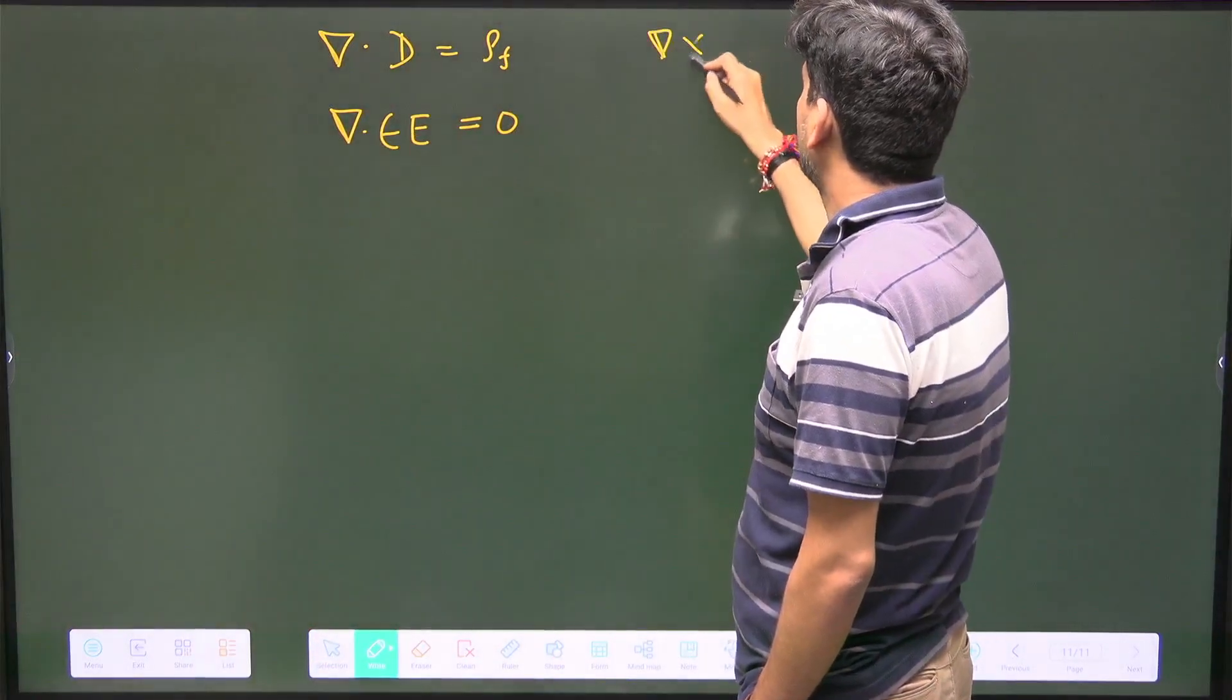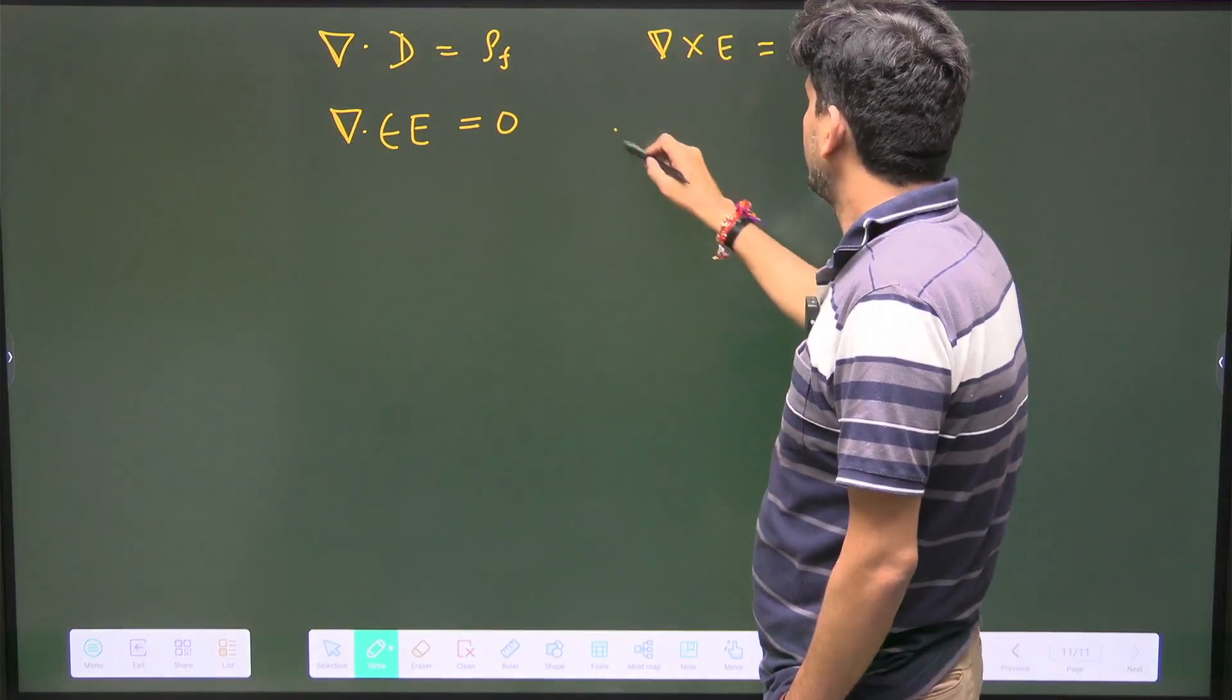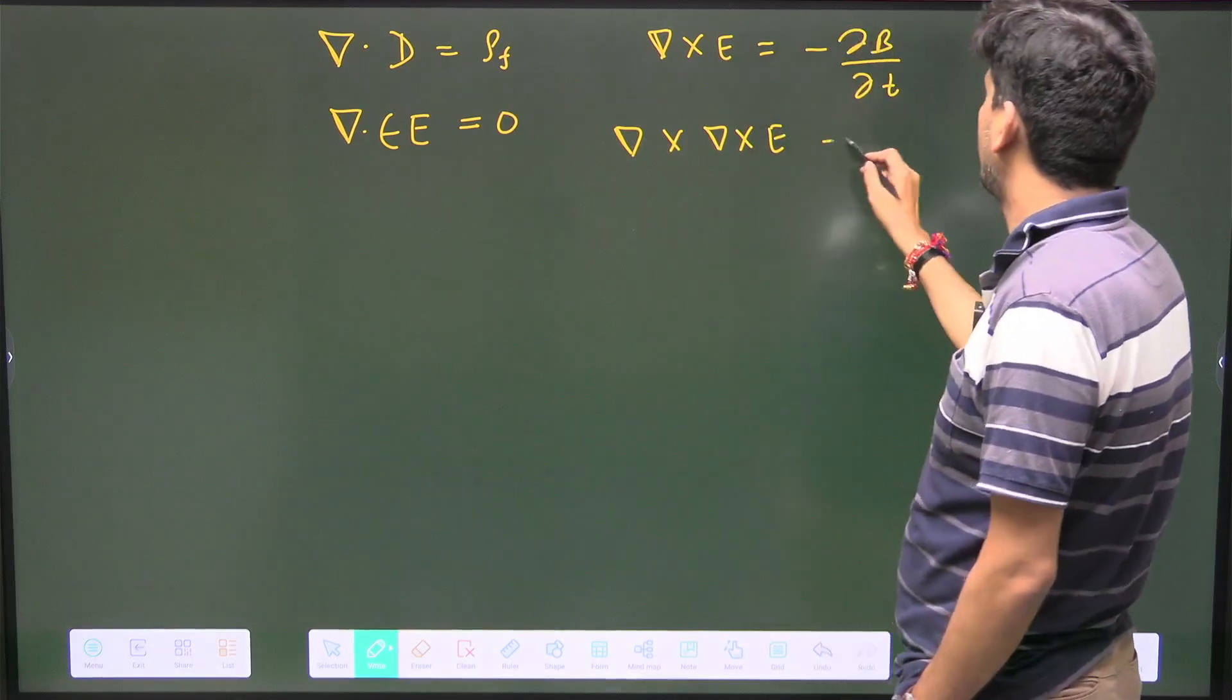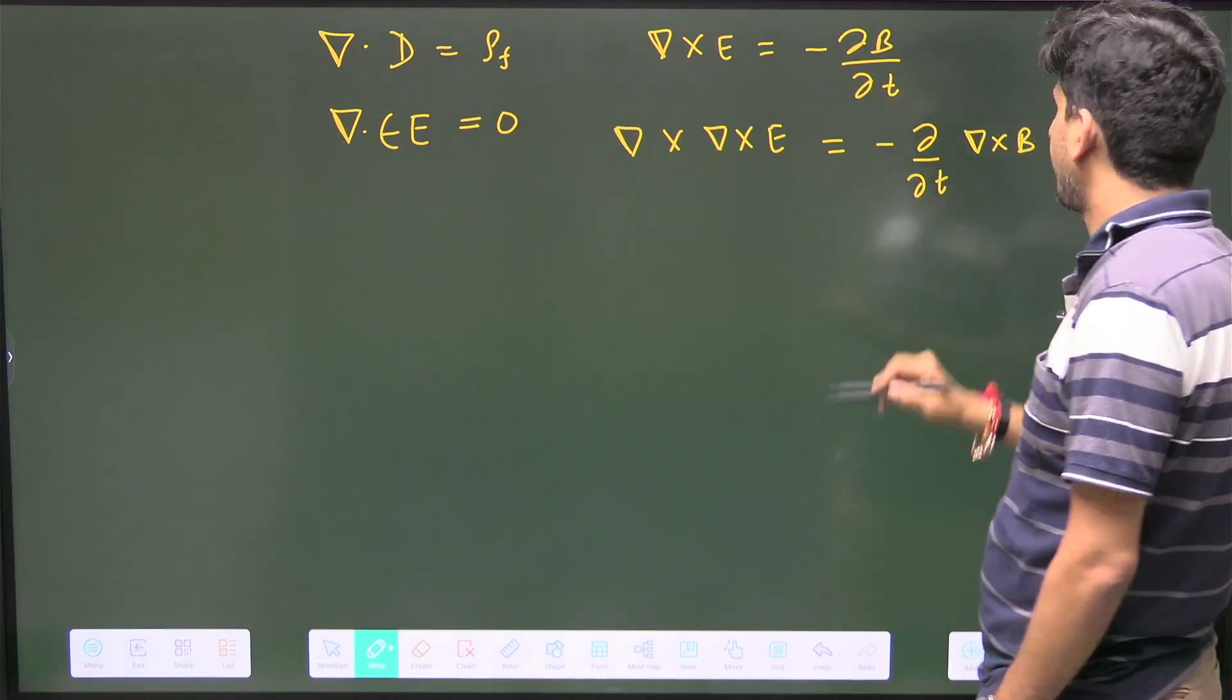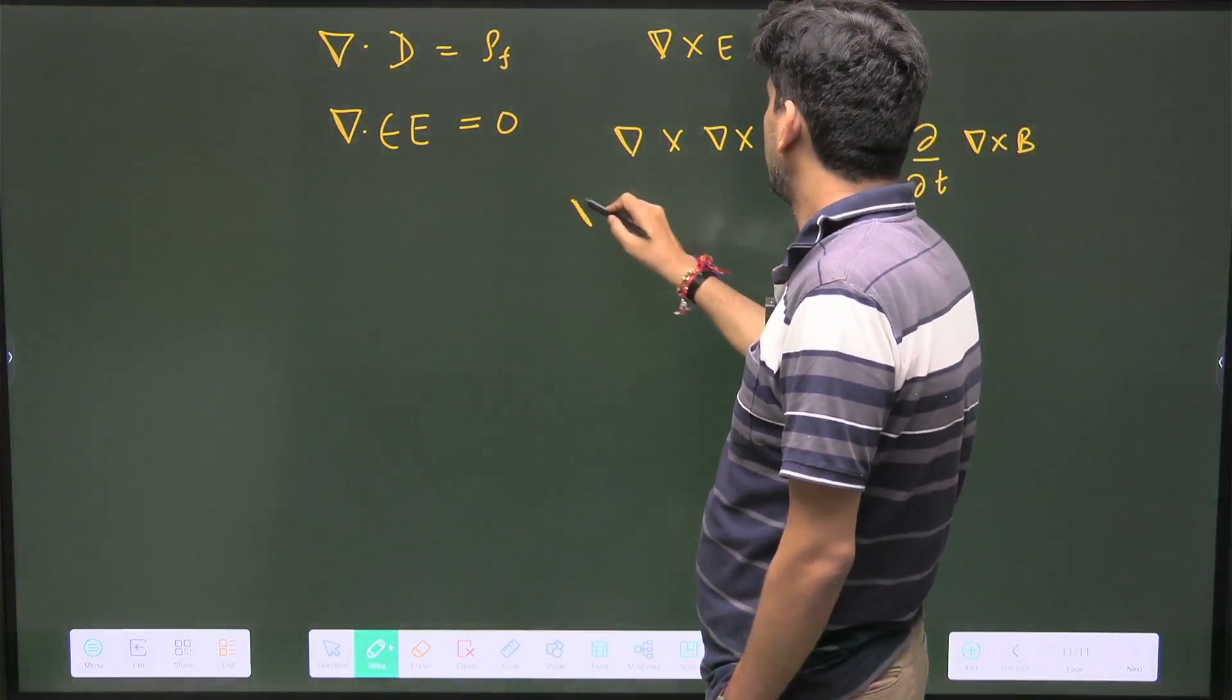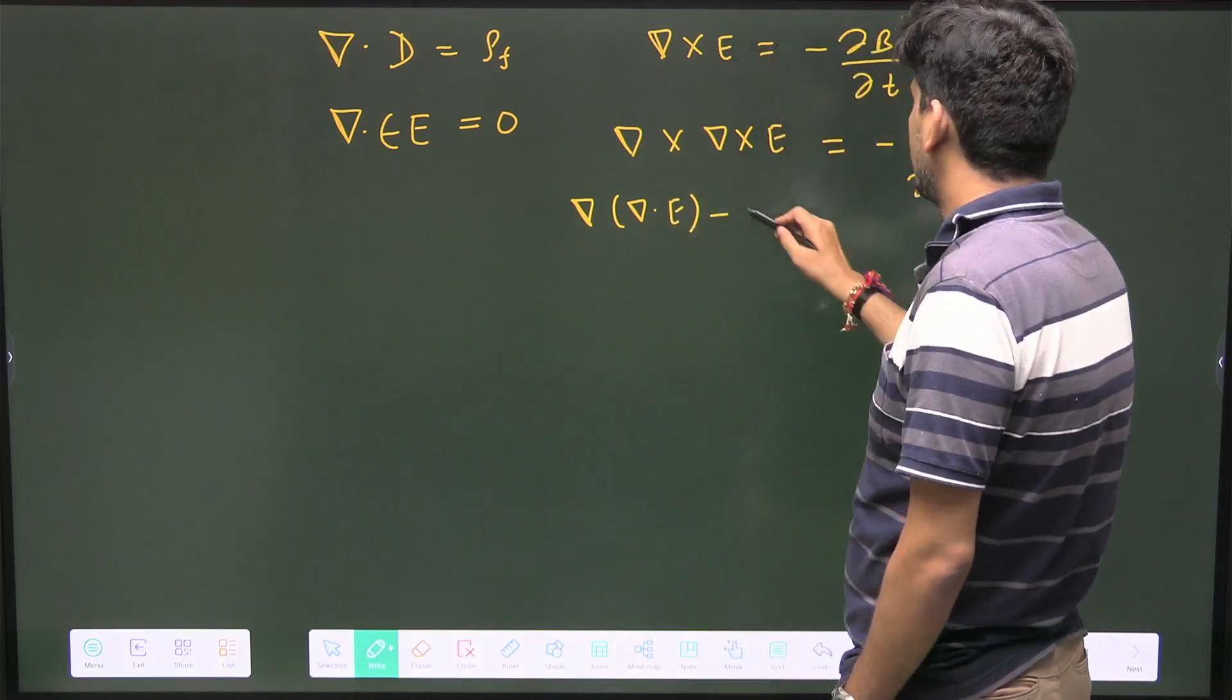And then del square is there, so I will write Faraday's law: del cross E is equal to minus del B by del t. The usual way is to take curl on both sides, so it is del cross del cross E is equal to minus del by del t of del cross B.